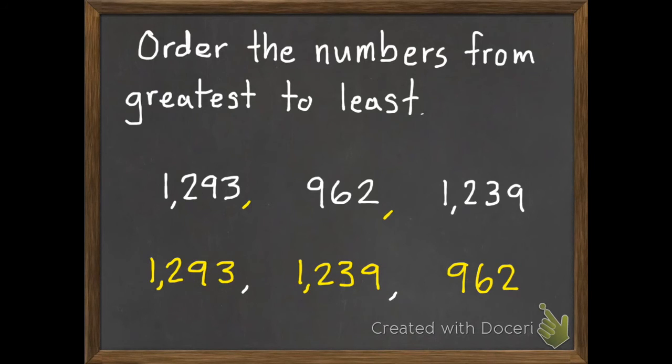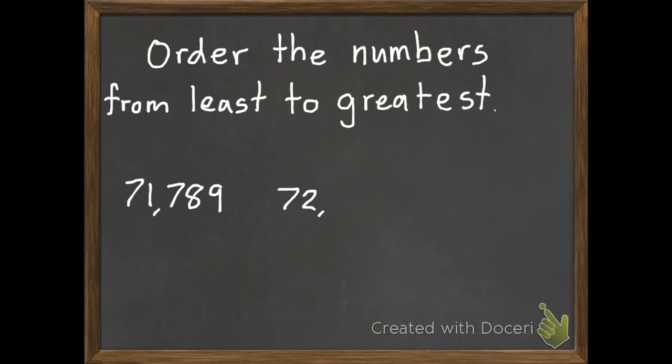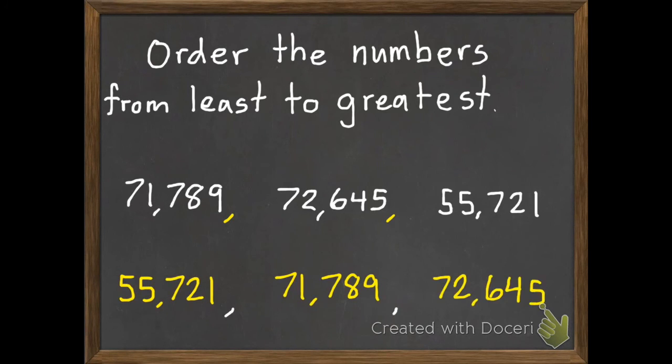Here's your second practice problem. Order the numbers from least to greatest. Your numbers are 71,789, 72,645, and 55,721. Pause it and unpause to check your work. The least is 55,721, middle is 71,789, and the greatest is 72,645.